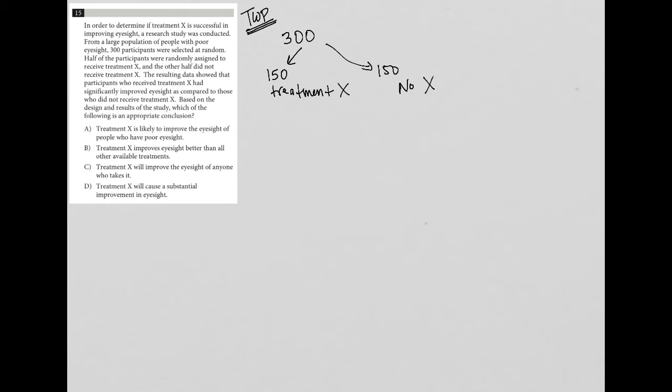The resulting data showed that participants who received treatment X had significantly improved eyesight as compared to those who did not receive treatment X. Based on the design and results of the study, which of the following is an appropriate conclusion? So then here we're going to just say eyesight got better. So my up arrow just means improved. Whereas here it didn't say that eyesight got worse, it just didn't get better. So I'm just going to do a flat line in terms of the eyesight.